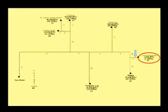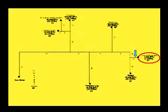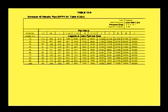The 5-foot section supplying the refrigerator has a demand of 3 cubic feet per hour and is 61 feet from the meter. Refer to table 12-8, 70-foot row — 3 fits under 60 — and see that a 1/2-inch pipe will accommodate the 3 cubic feet per hour demand for the refrigerator.